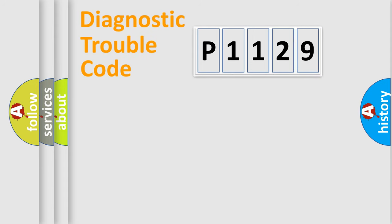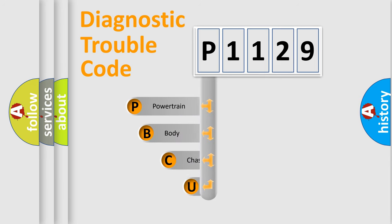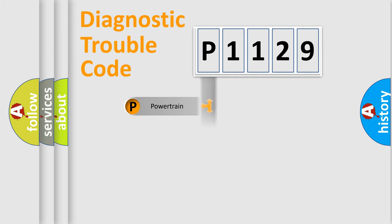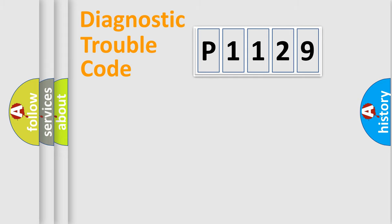Let's look at the history of diagnostic fault code composition according to the OBD-II protocol, which is unified for all automakers since 2000. We divide the electric system of an automobile into four basic units: Powertrain, Body, Chassis, and Network.